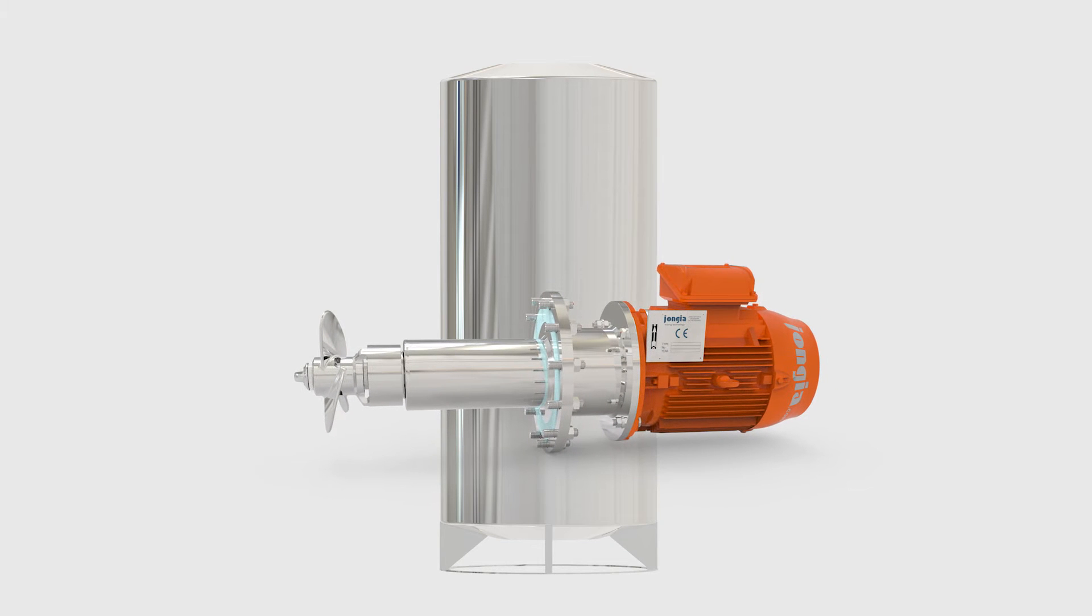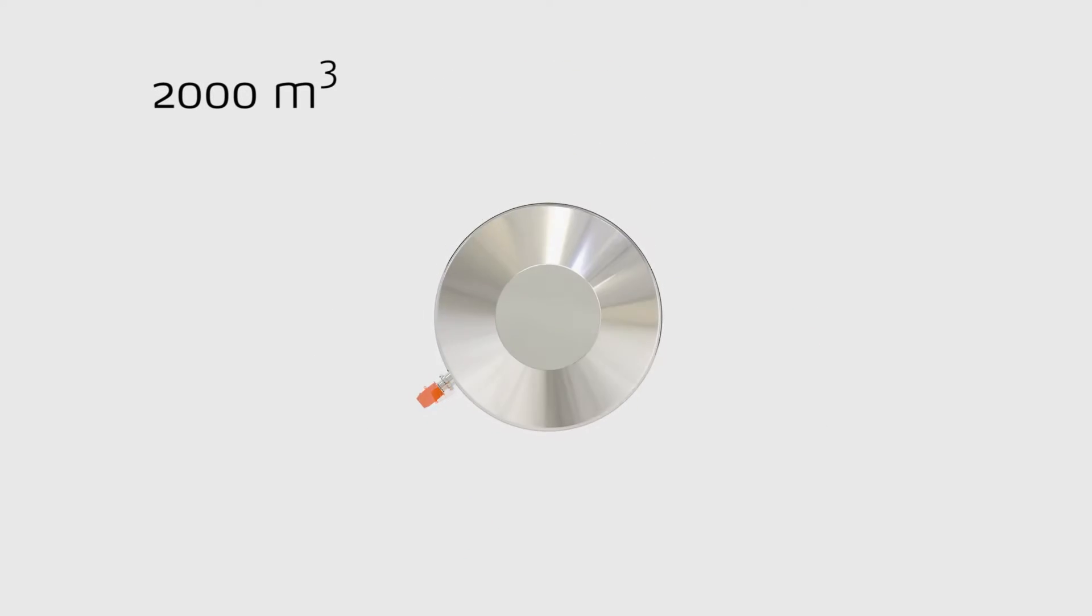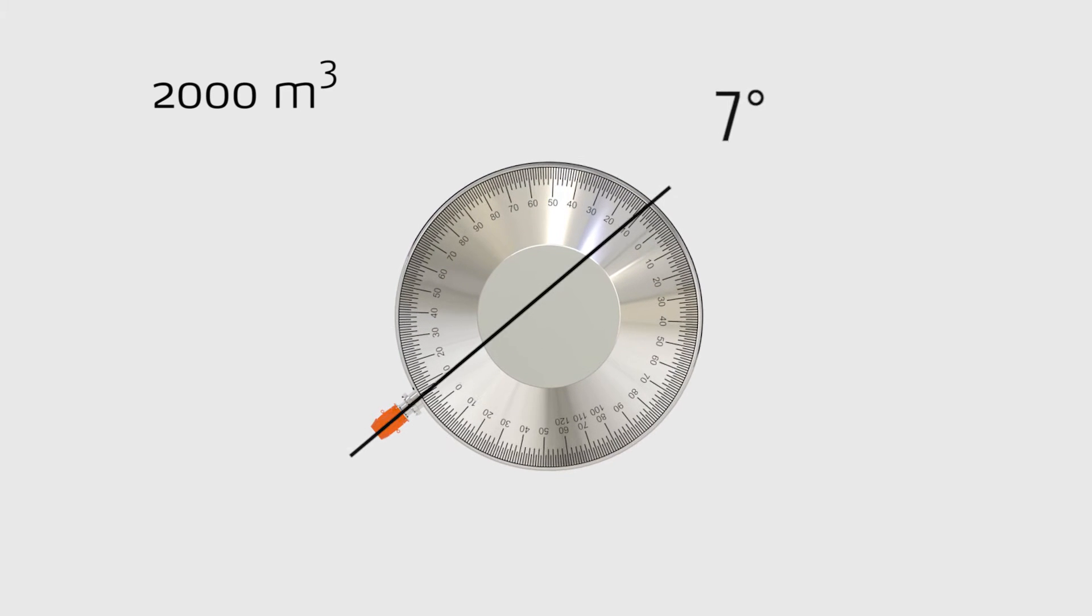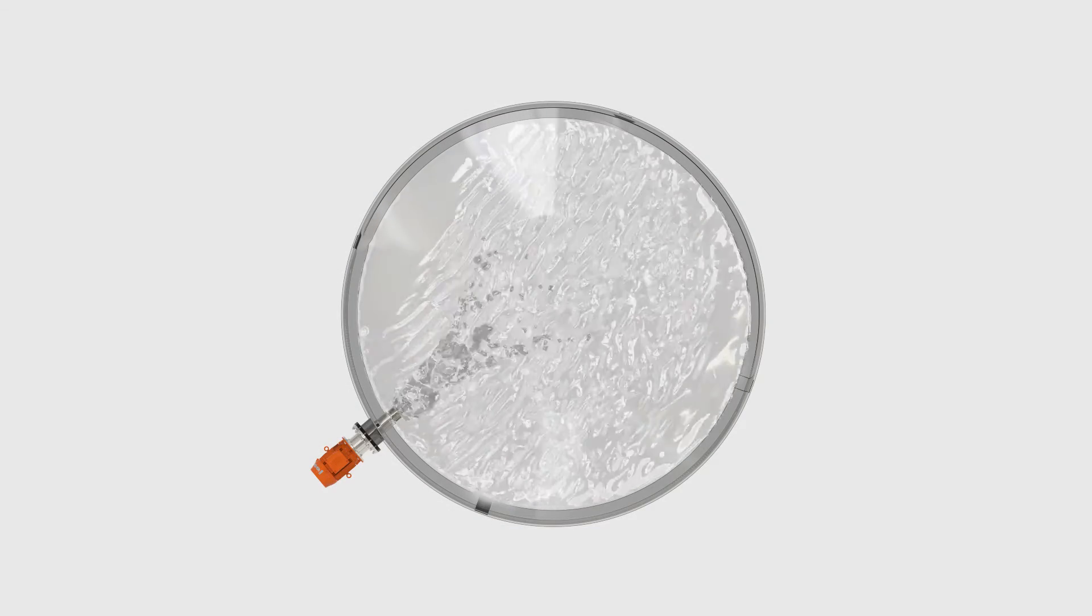Most magnet-driven mixers are designed for small vessel volumes, but Yongia's Magitator can handle volumes up to 2,000 cubic meters. Installed horizontally at a 7-degree angle, like most of our side entries, it creates a powerful flow throughout the vessel.